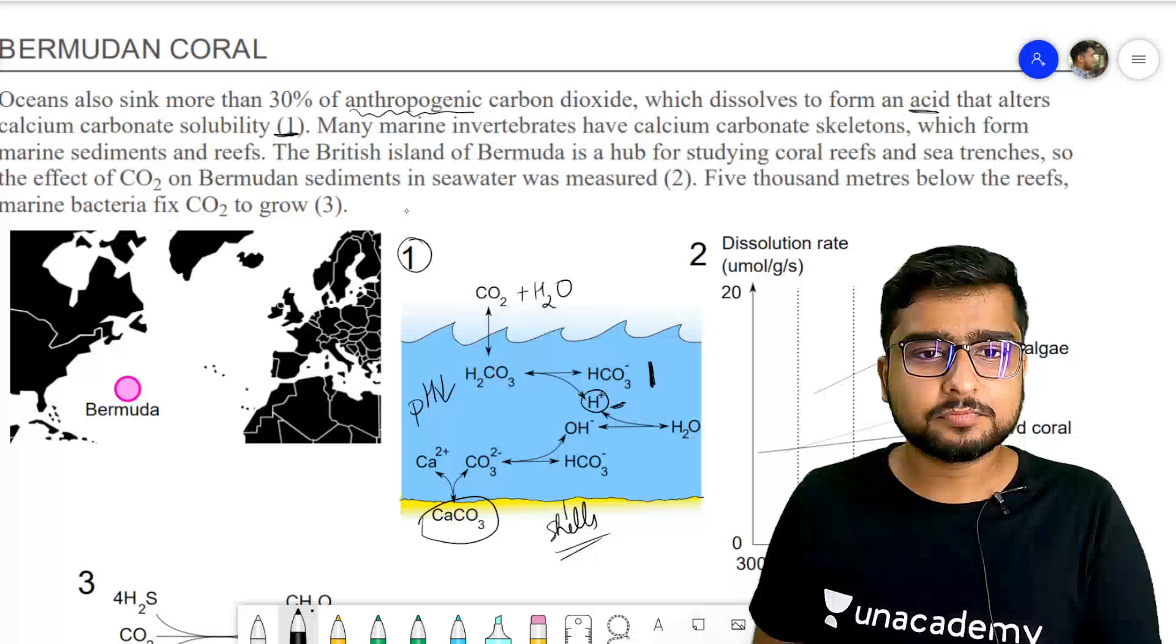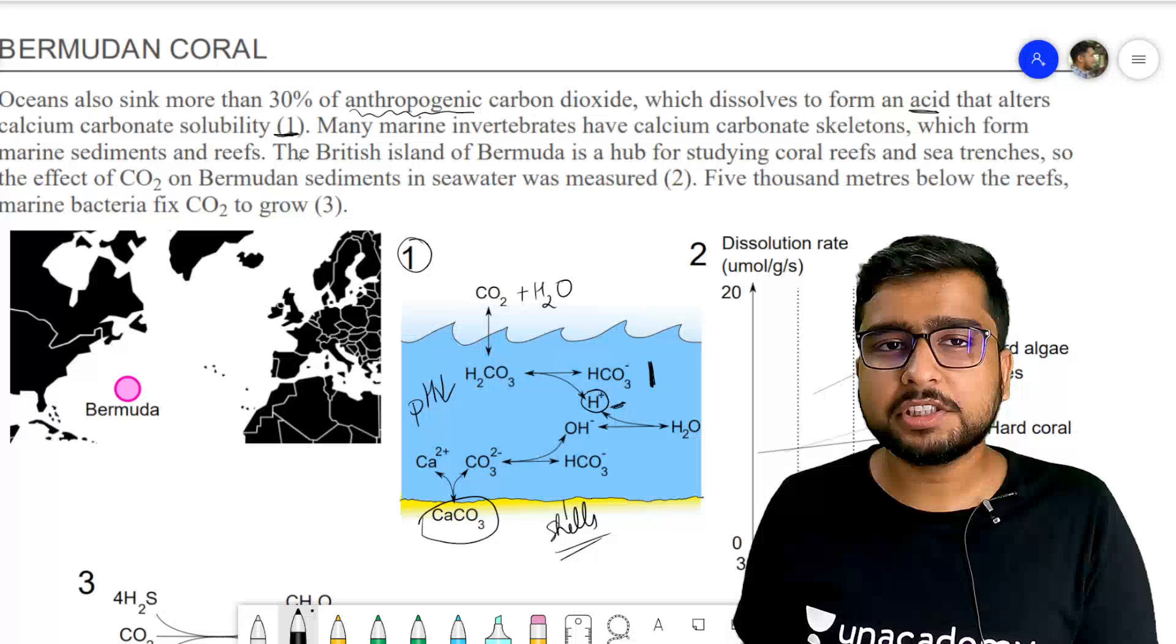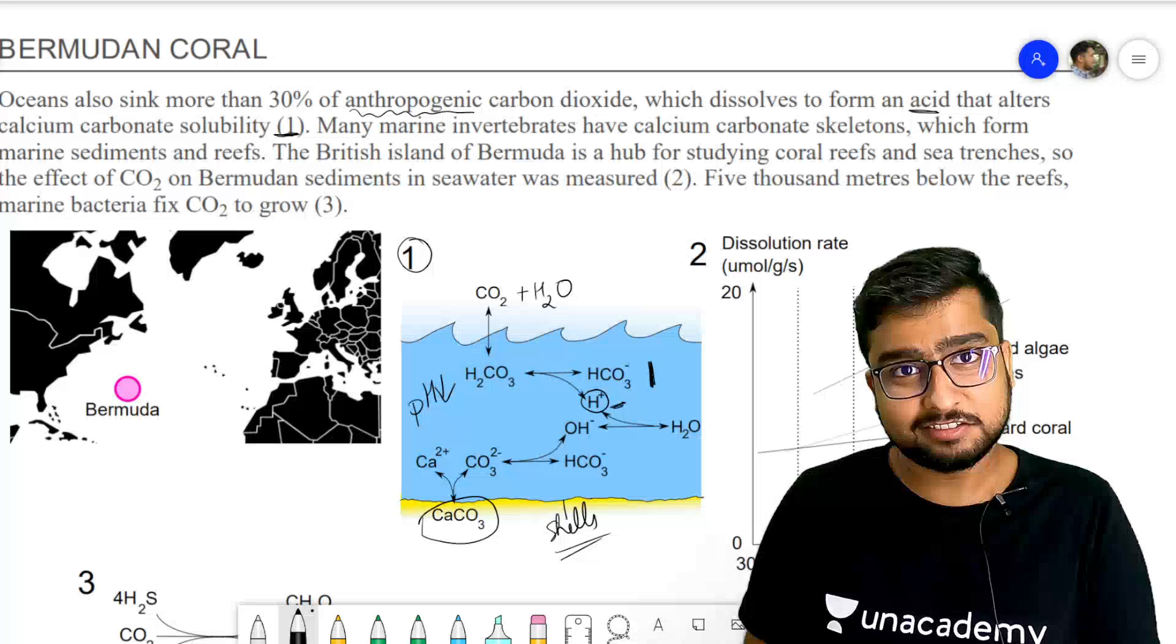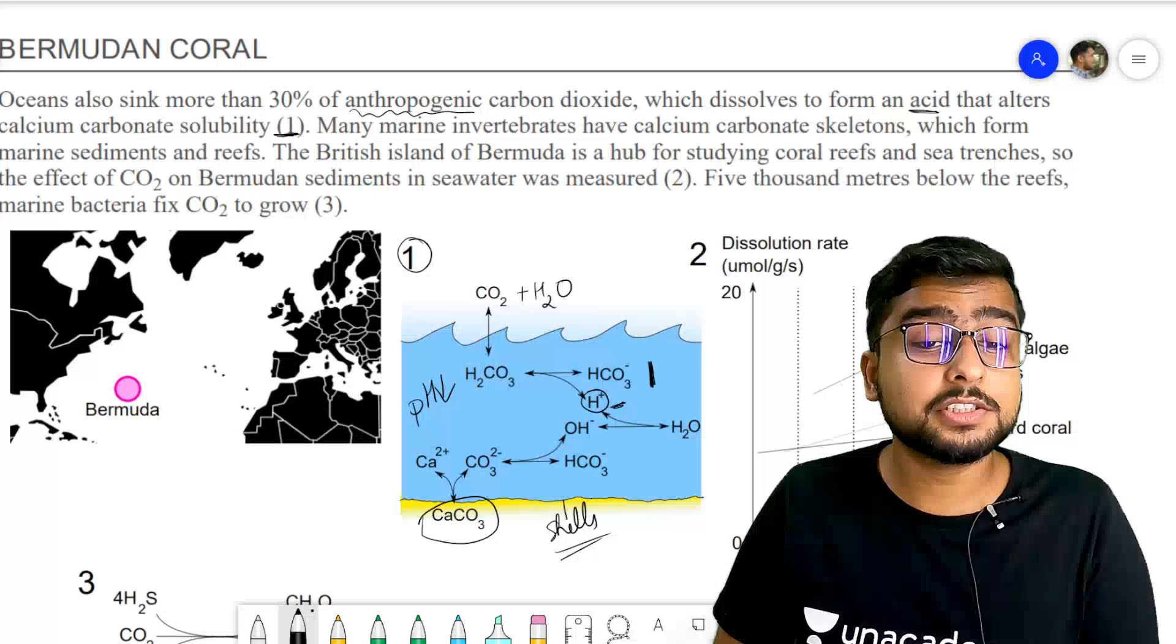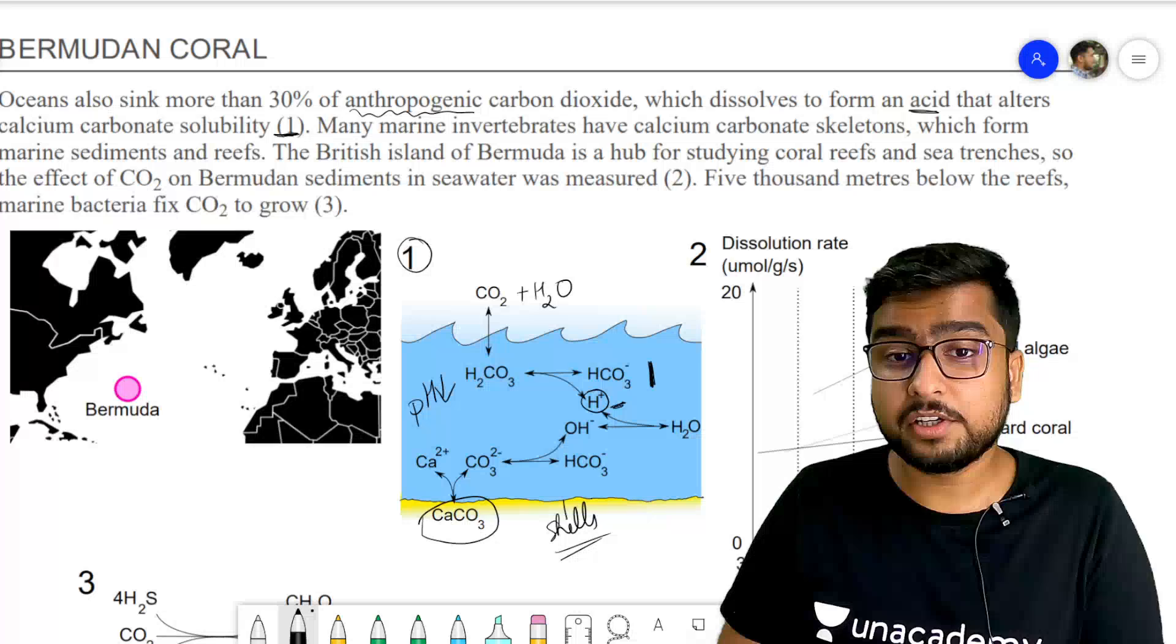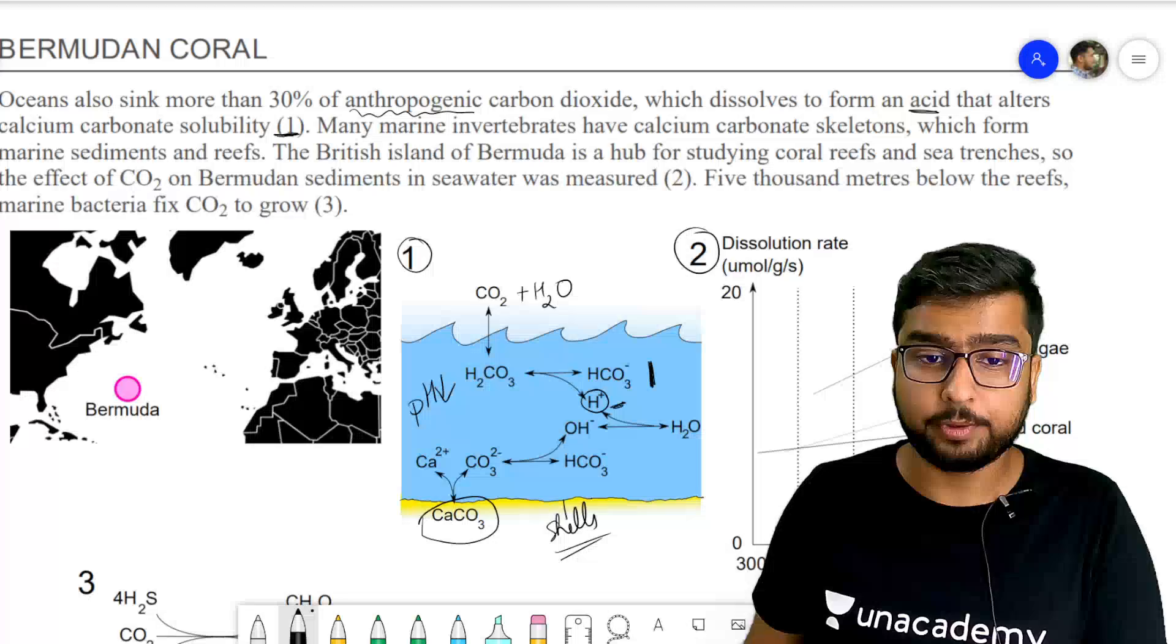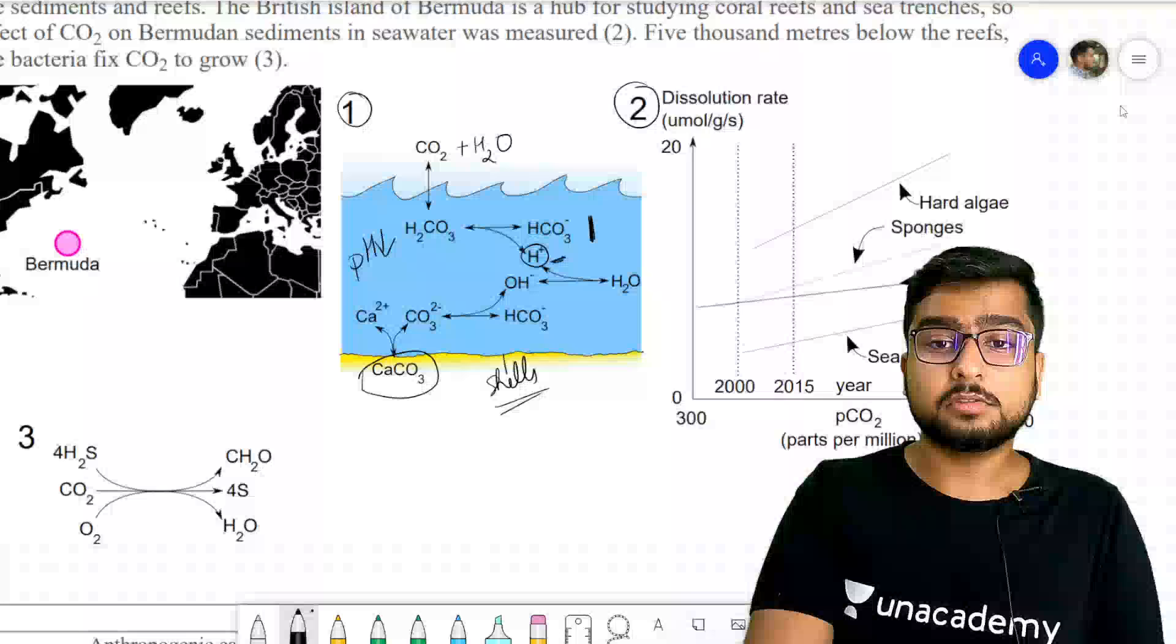Second, many marine invertebrates have calcium carbonate skeletons which form marine sediments and reefs. The British island of Bermuda, bahut famous hai, the Bermuda Triangle, is a hub for studying coral reefs and sea trenches. So the effect of carbon dioxide on Bermuda sediments in sea water was measured. Toh sediment mein kitna zyadha effect hota hai, yeh measure kiya tha graph number 2 mein. Let me bring this ahead graph number 2.